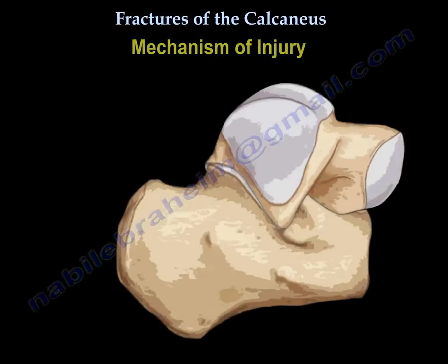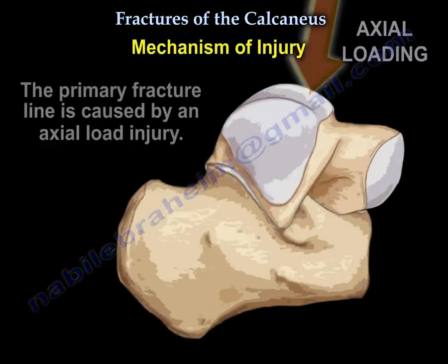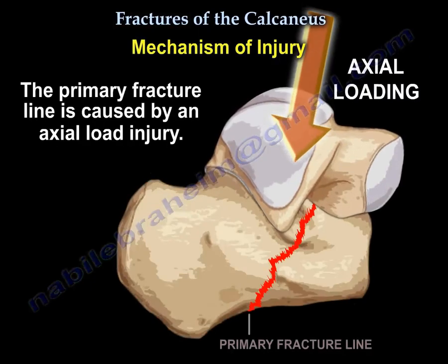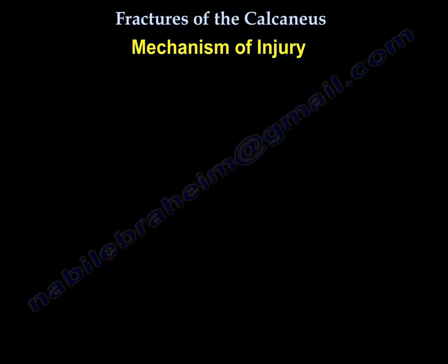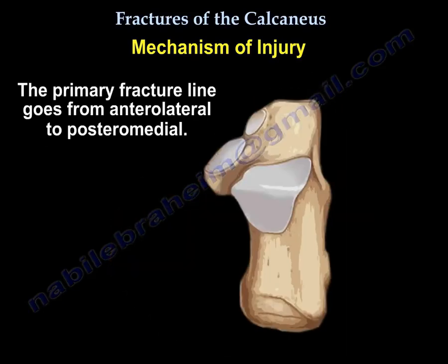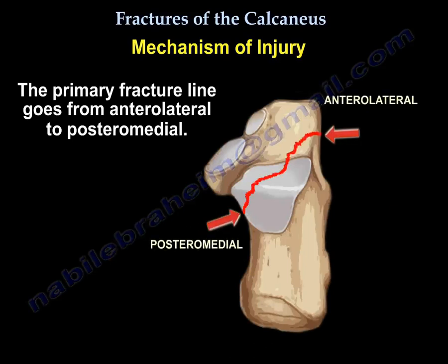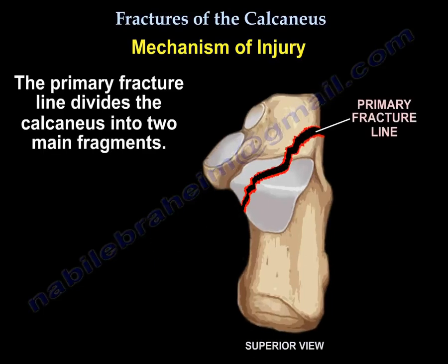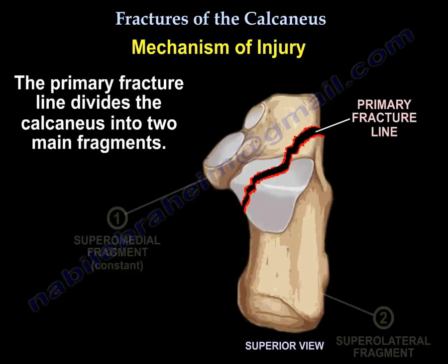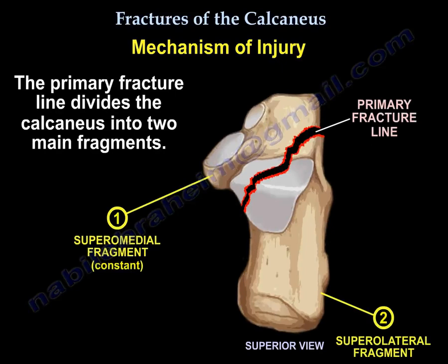Mechanism of injury: the primary fracture line is caused by an axial load injury. The primary fracture line goes from anterolateral to posteromedial, dividing the calcaneus into two main fragments.